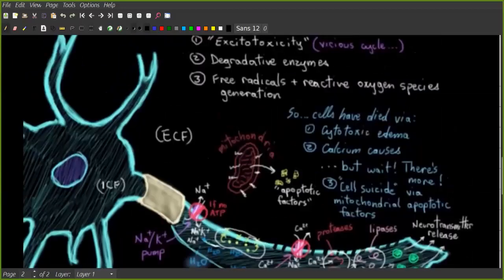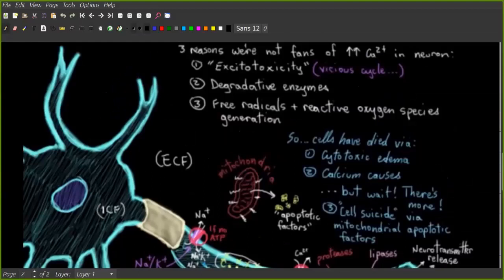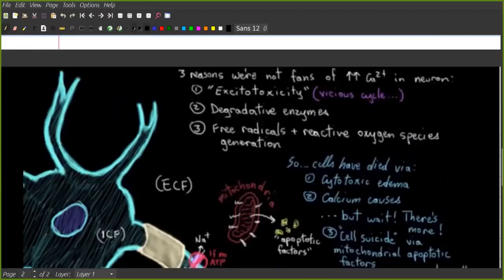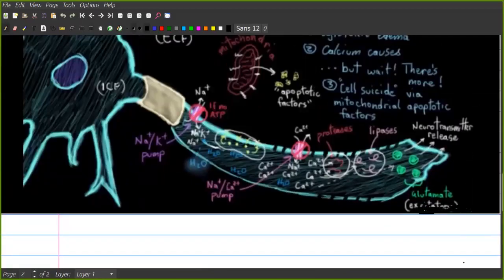And cells, if they haven't died by cytotoxic edema or calcium, have the mitochondria which is responsible for making the ATP. So what happens is it sends out apoptotic factors and they send to the cells so that they suicide because there's nothing else to do and they can't fight back.